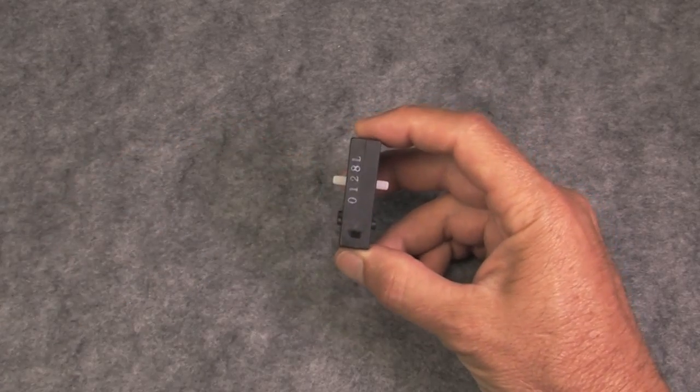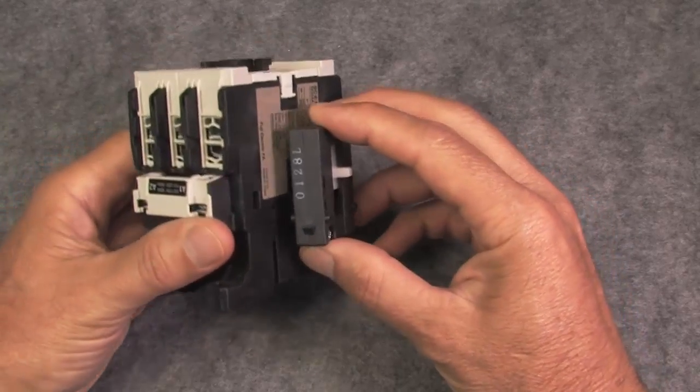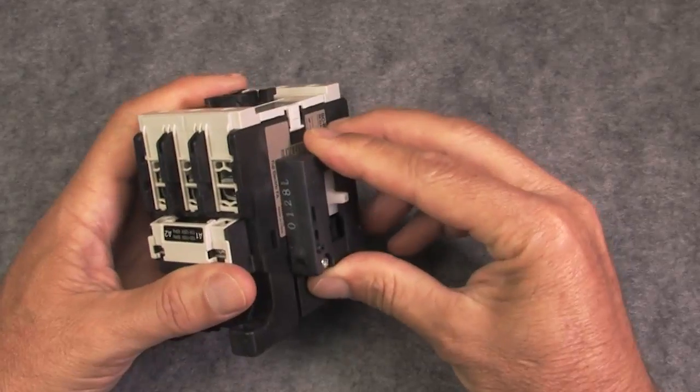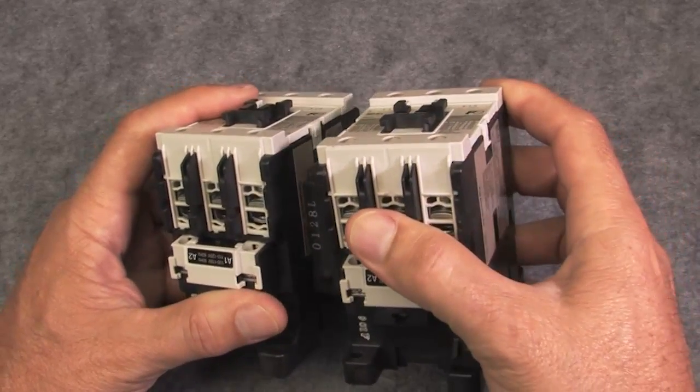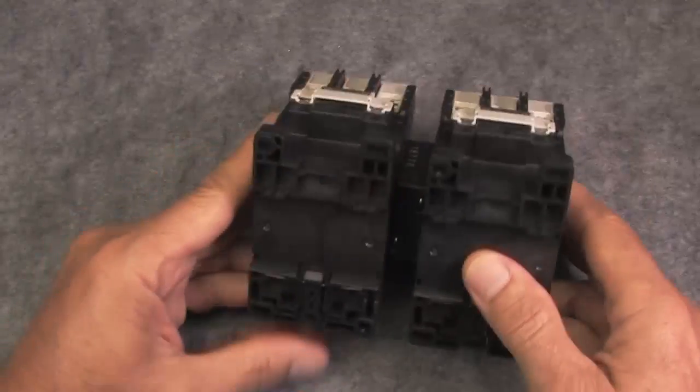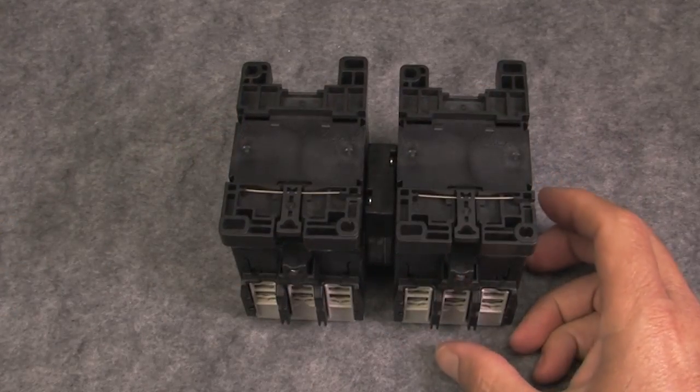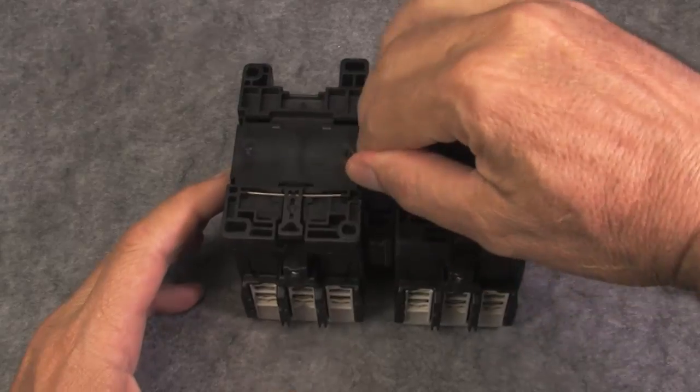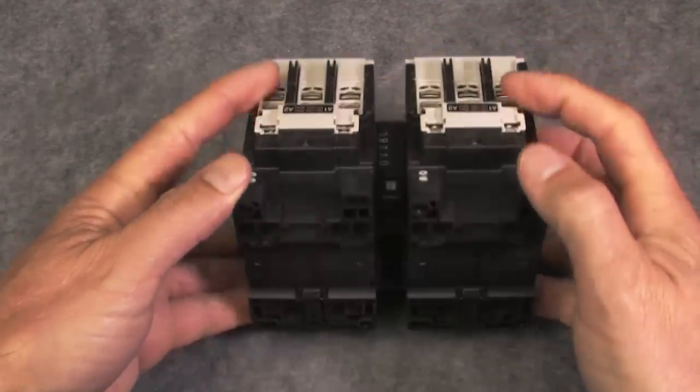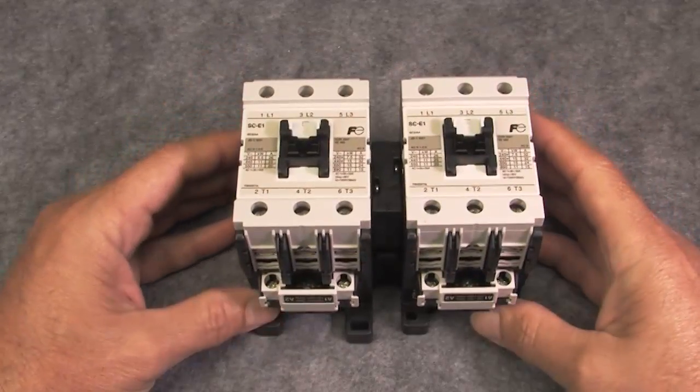If the coils energize at exactly the same time, the two sides will bind and neither will activate. But the odds of that happening are slim because usually one slips ahead of the other. To install this mechanical interlock, you just insert it between the two contactors.